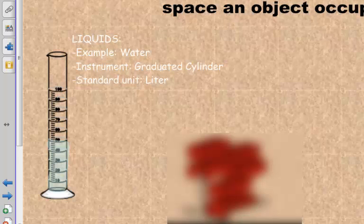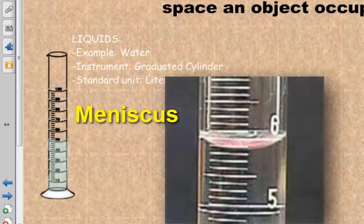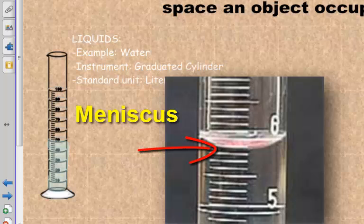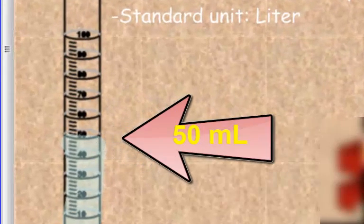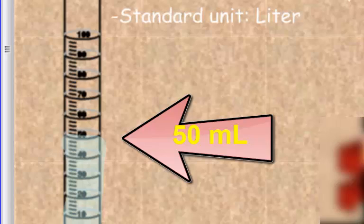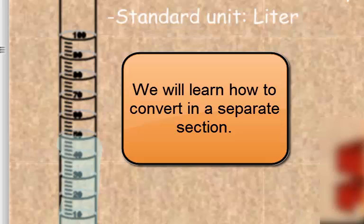To measure the volume of a liquid, you want to get your eyes right at the level where that liquid is. And that line that you're looking at is actually called the meniscus line. M-E-N-I-S-C-U-S. You want to write that in your notes. And the meniscus line kind of looks like a smiley face. You want to look at the bottom of that smiley face to measure the volume of that liquid. Now let's take a look at our own example. Let's say it's about 50 milliliters where our meniscus line lines up. We're going to say milliliters because it is a small unit. But you see that the standard unit for measuring liquids is a liter. So we will investigate how to convert liters to milliliters in a separate section.